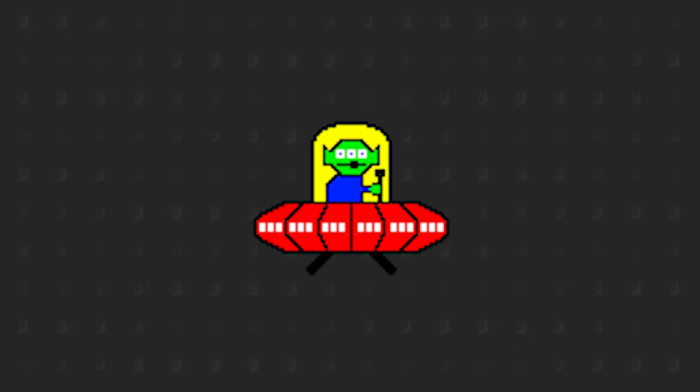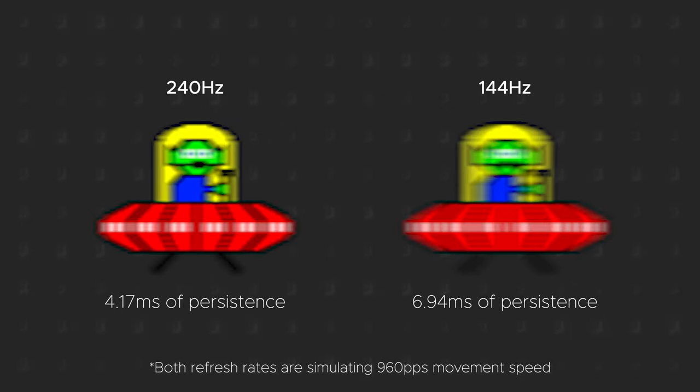So do both the 144Hz and 240Hz monitor with 7ms of response times produce the same result? If you answered no, good. If not, the reason why is because both monitors have different persistence. It takes 4.17ms for a 240Hz monitor to display a new frame, whereas with the 144Hz monitor it takes 6.94ms to display that new frame. So in order for both the 144Hz and 240Hz monitor to display essentially no ghosting, they'll need response times that are right around their compliance.